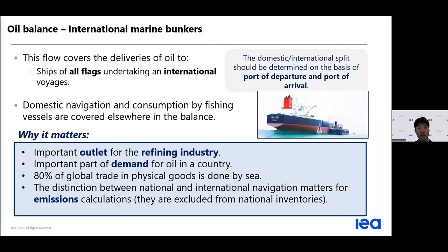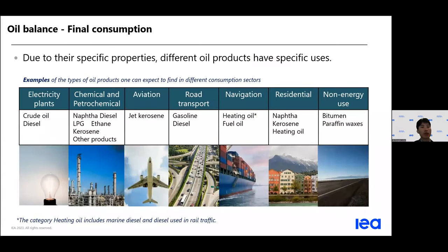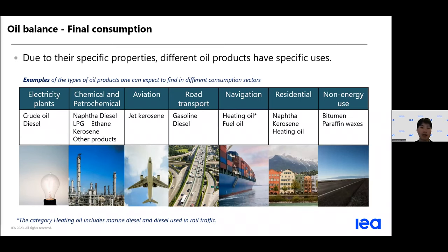What is consumed for international bunkers is excluded from national inventory calculation. When we look at the final consumption side, depending on the specific properties of oil products, there are certain users or economic sectors using specific oil. One good example: jet kerosene is mainly used by aviation, and gasoline and diesel by road transport, which is likely to be the largest consumer among each sector. Naphtha is mainly used for non-energy use — here the picture shows the pathway.